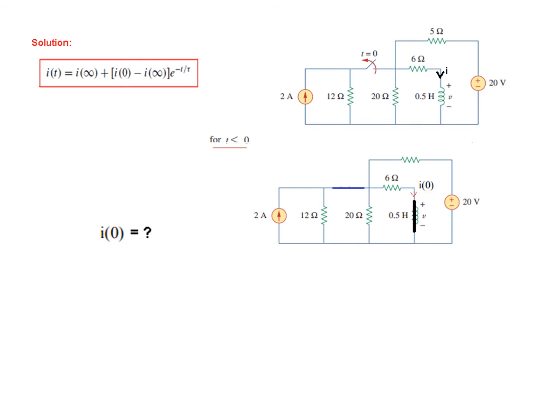So this is the short circuit. And the current will now be called I(0) because we are considering it for t less than 0. So we need to find this current I(0). You can use several techniques that you have learned, such as Ohm's law and combining these in parallel.